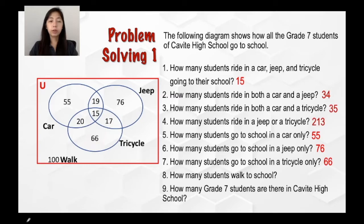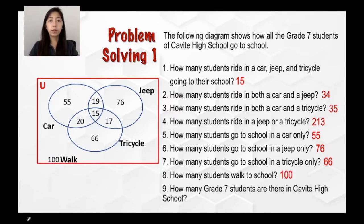For the eighth question, how many students walk to school? Upon looking into the Venn diagram, the students walking to school can be located outside the three given sets, which is this one. So in that case, there are 100 students who walk to school.